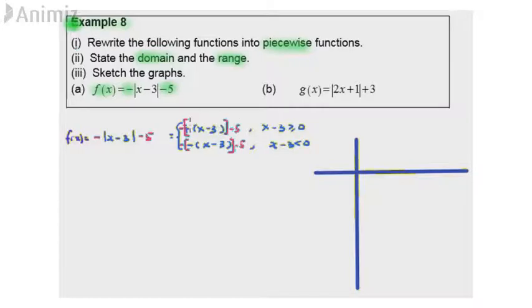We're going to simplify each part. Negative times positive is negative. Negative times x is negative x. Negative times negative 3 is plus 3 minus 5. Simplify it, give us negative x minus 2. This is for x greater or equal 3.